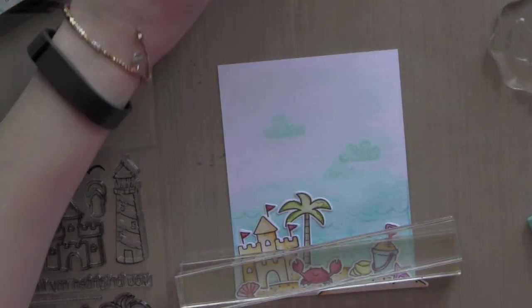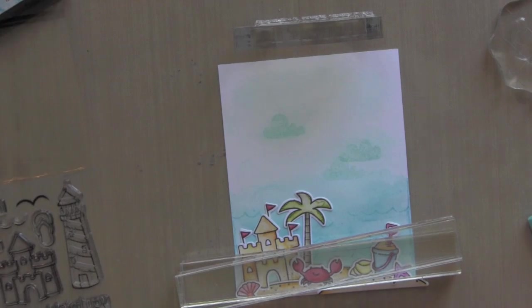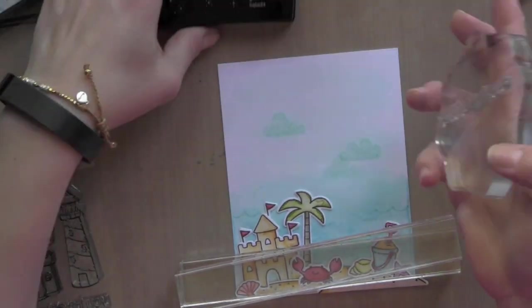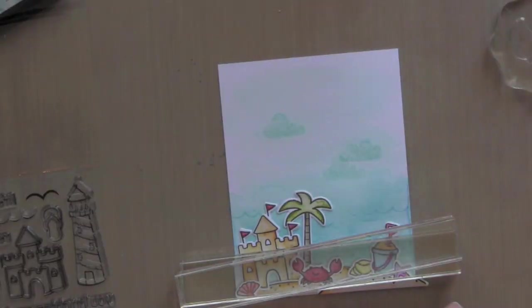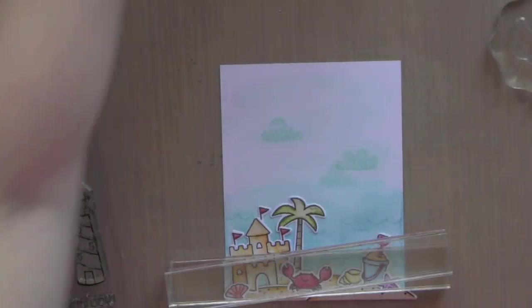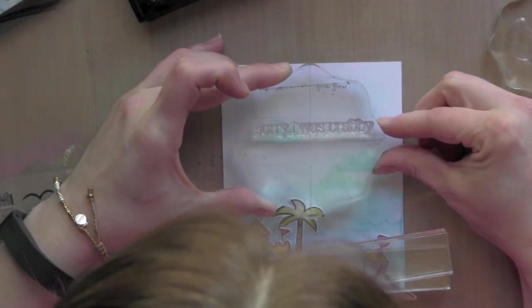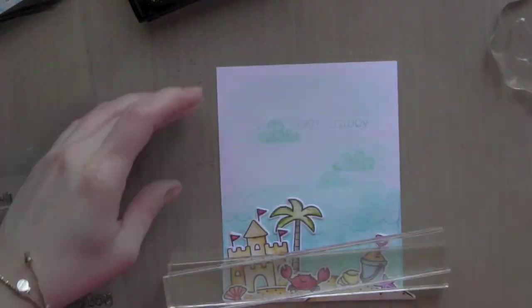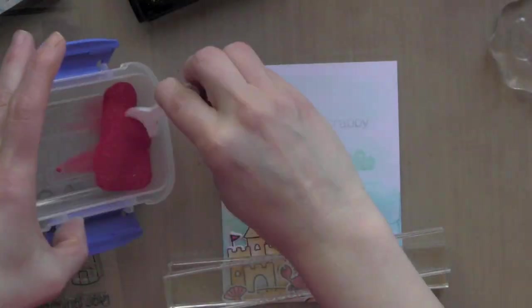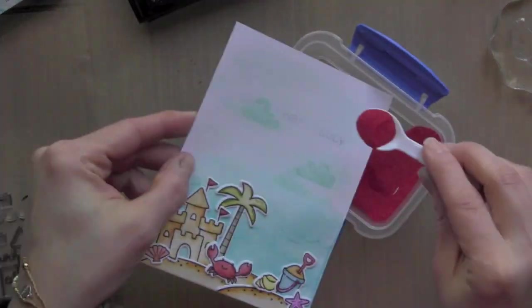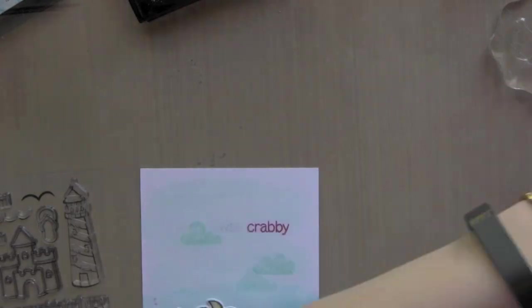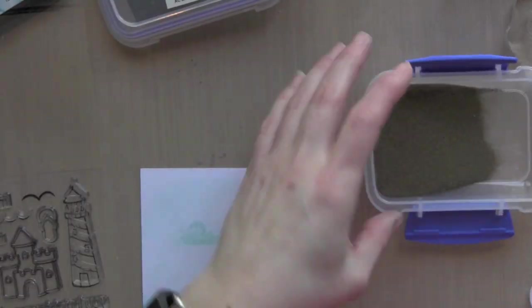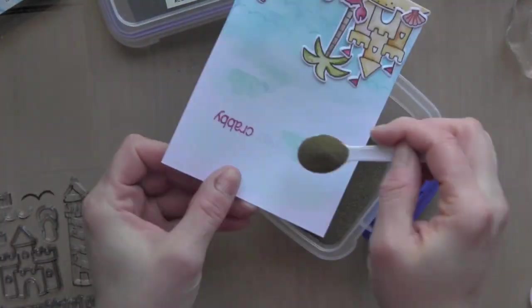While the glue is drying and holding all those little elements in place, I have used the Inkadinkadoo powder tool to rub that across the top of my card so that the embossing powder for my greeting doesn't stick anywhere else. I am going to take some Versamark and the greeting Sorry I Was Crabby and stamp that on the top of my card. You can see I stamped it in another color some other time and didn't get my stamp very clean. Luckily I am embossing with some darker embossing powder so it won't matter.